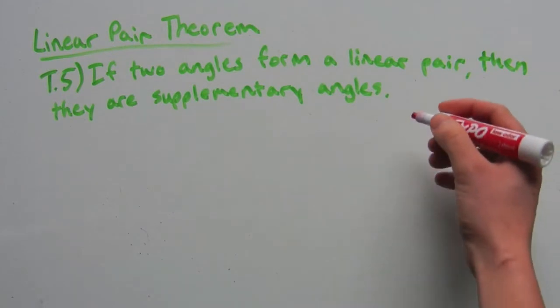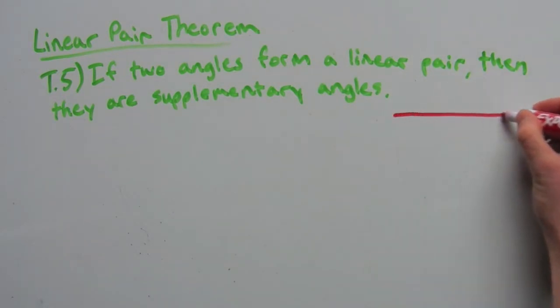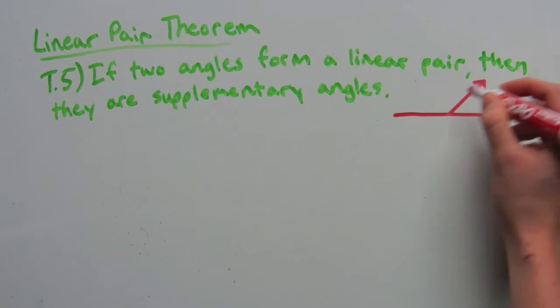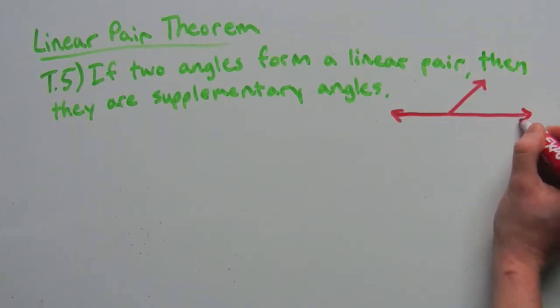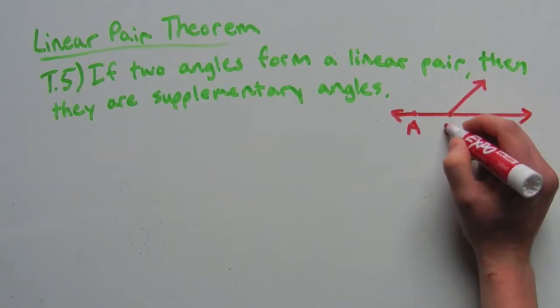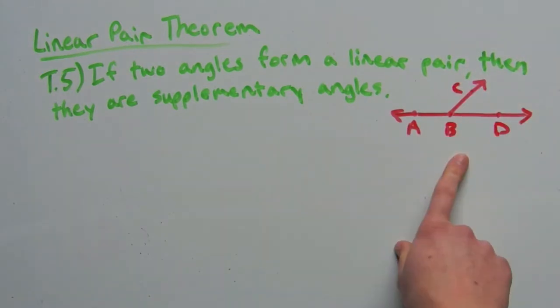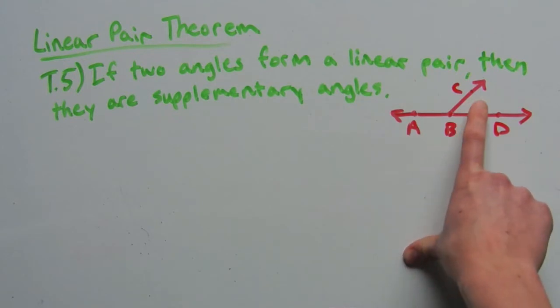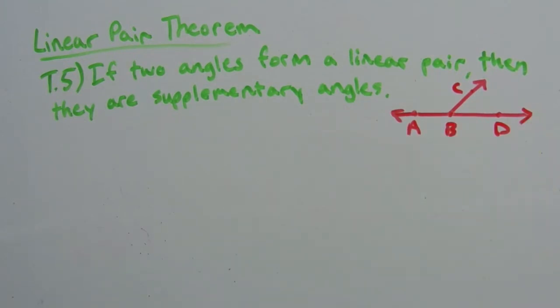Drawing a picture of this, we can see that we have a linear pair, and we're trying to prove that ABC and CBD are supplementary. Let's do an informal proof for this.